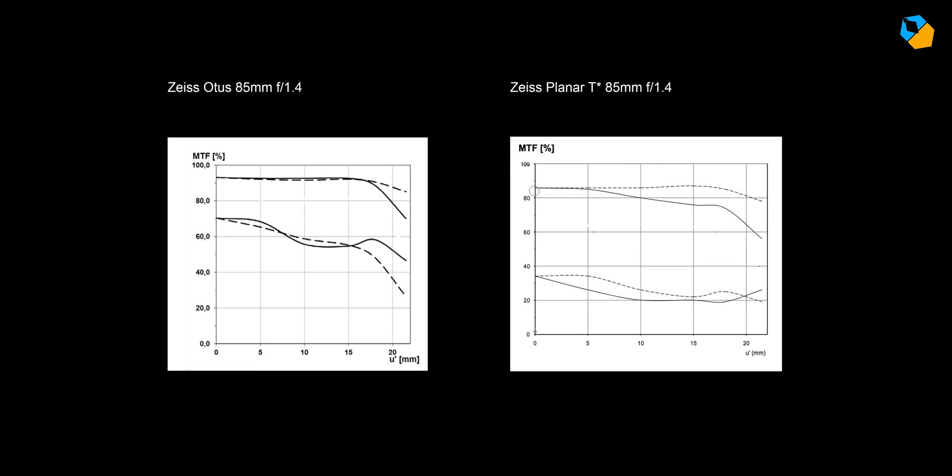Now let's compare the acutance lines. The planar starts off at 85%, but drops off almost to 50%, while the perpendicular results are much better. On the other hand, the Otis is almost at 95% and drops to 70% while doing well with the dotted lines. Since the Otis has higher values, it has the better acutance as well. Not only is the Otis excellent at the center, but it also performs well for fine detail.